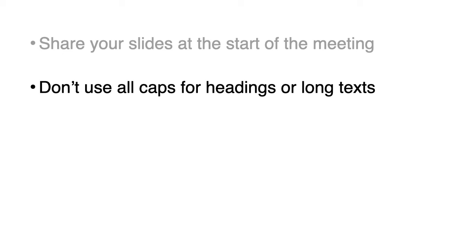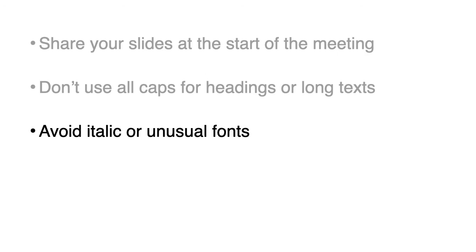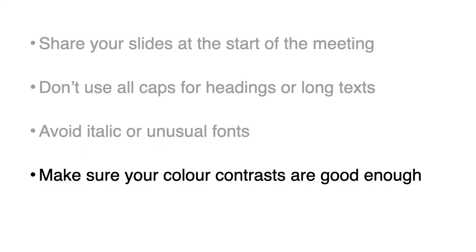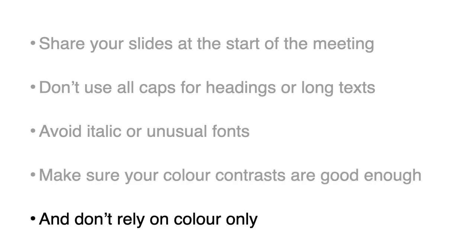In some cases, screen readers might think it's an acronym and start reading it letter by letter. Avoid italic or unusual fonts — it's harder to read too for dyslexic people and for everyone else in fact. Make sure your color contrasts are good enough, between your background and your text. This will help people with low vision in particular. And don't rely on color only — colorblind people don't see the difference between some colors as well as others.